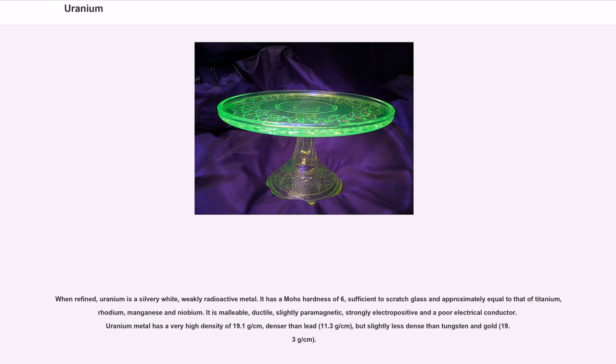When refined, uranium is a silvery white, weakly radioactive metal. It has a Mohs hardness of 6, sufficient to scratch glass and approximately equal to that of titanium, rhodium, manganese and niobium. It is malleable, ductile, slightly paramagnetic, strongly electropositive and a poor electrical conductor.